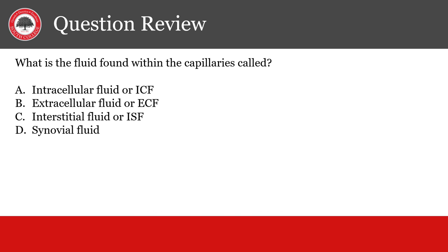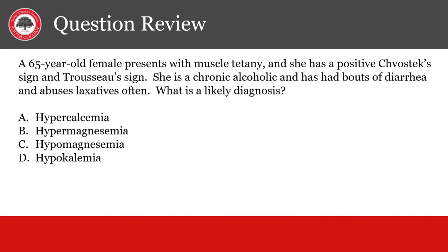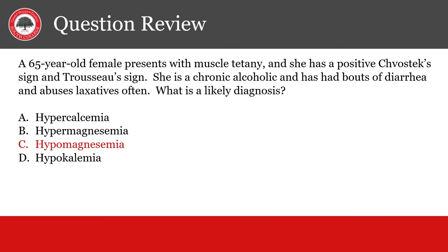What is the fluid found within the capillaries called? The answer is the extracellular fluid or ECF. A 65-year-old female presents with muscle tetany and she has a positive Chvostek sign and Trousseau sign. She is a chronic alcoholic and has bouts of diarrhea and abuses laxatives often. What is the likely diagnosis? The answer is hypomagnesemia. It is accompanied by hypocalcemia and also hyperphosphatemia. All three could be answers to this question, so be aware of the relationship between these three electrolyte imbalances.